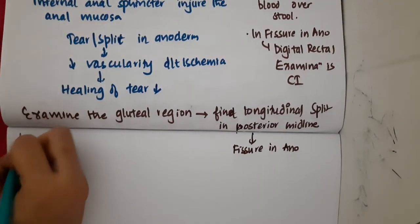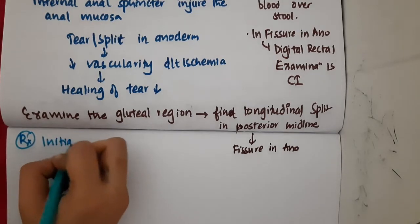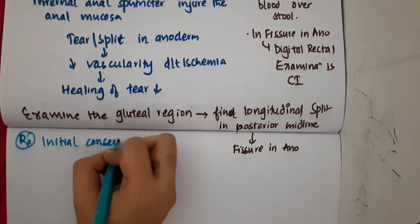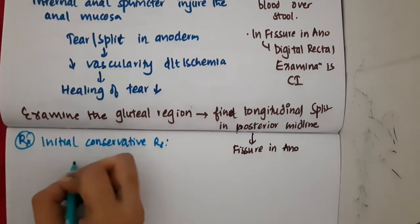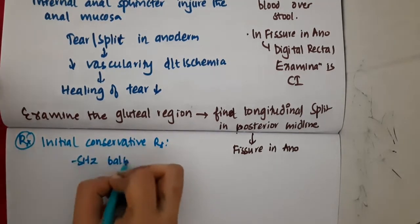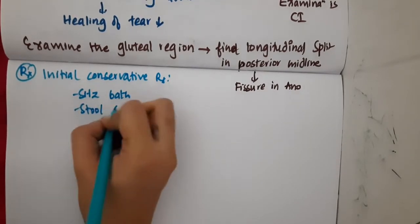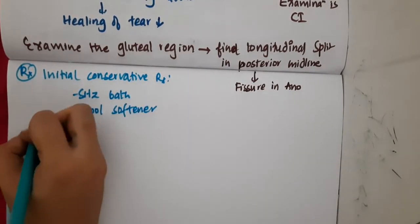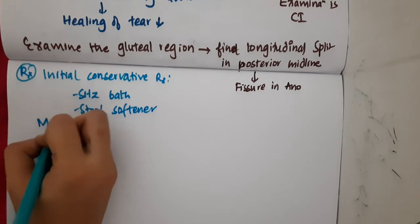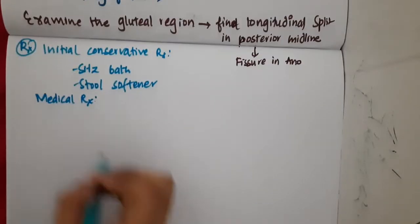The treatment starts with initial conservative management. You can use a sitz bath and also a stool softener. If conservative management fails, you can proceed to medical treatment.